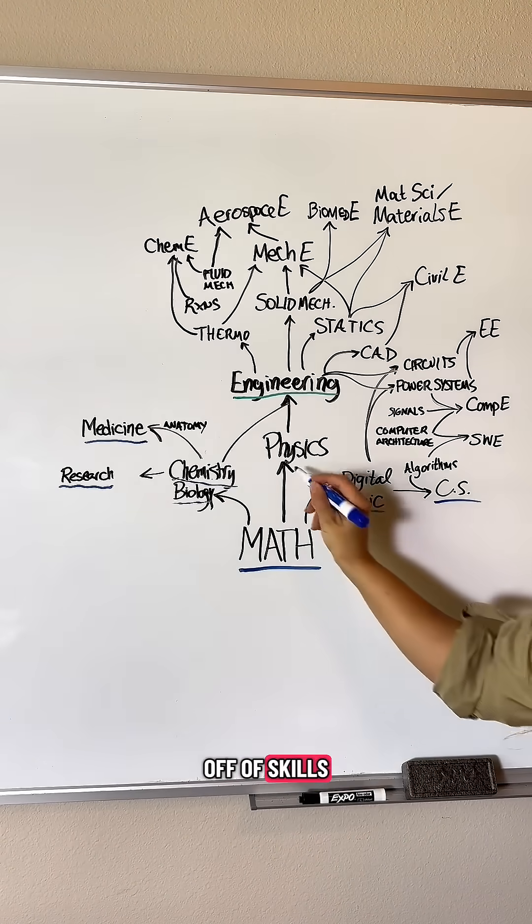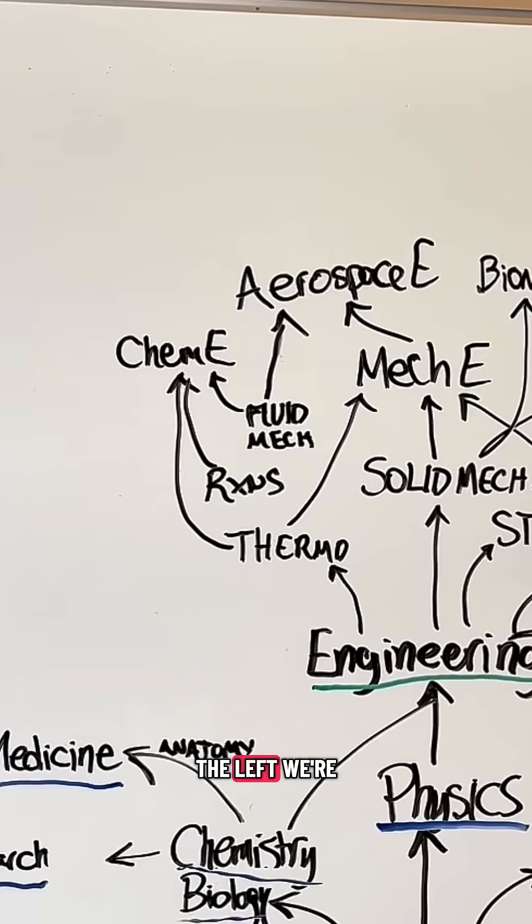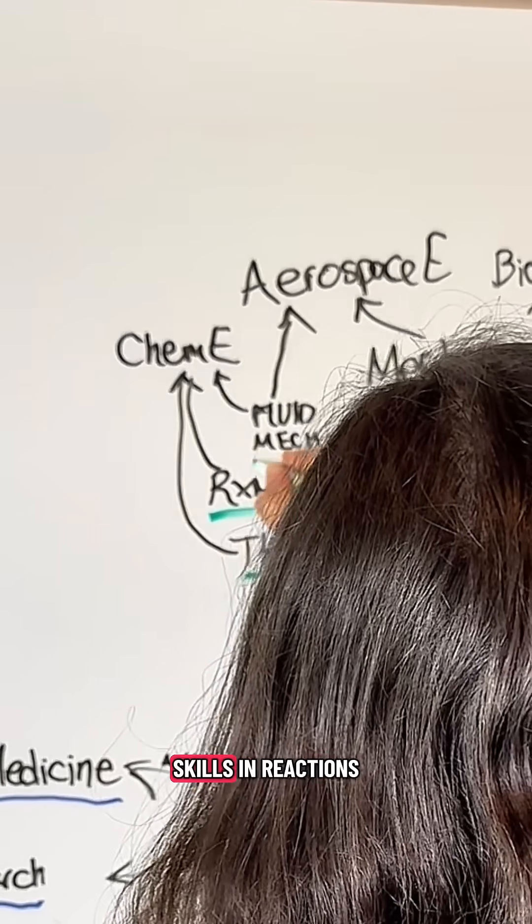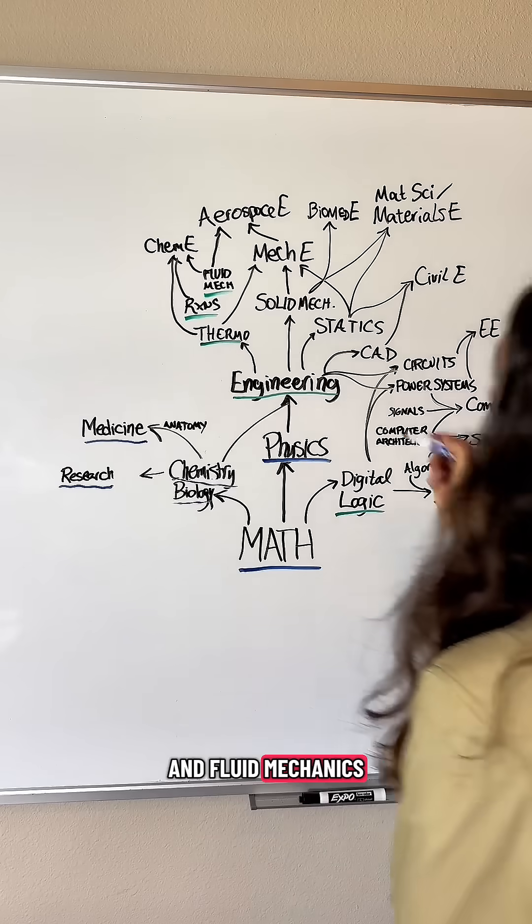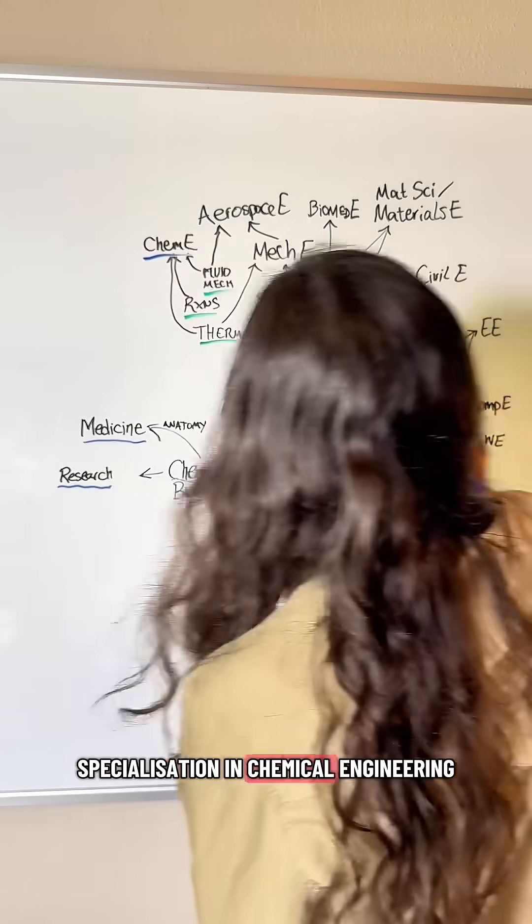Engineering is founded off of skills in physics. Over here on the left, we're branching off from thermodynamics and picking up skills in reactions and fluid mechanics, leading to a specialization in chemical engineering.